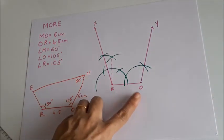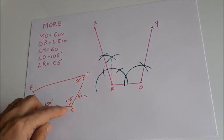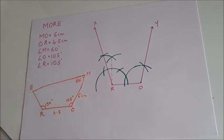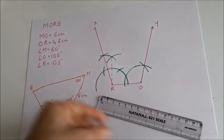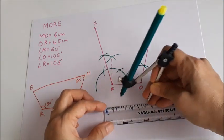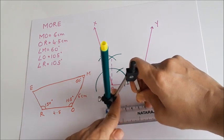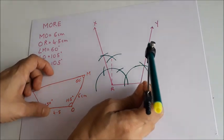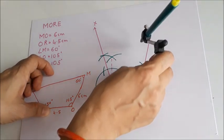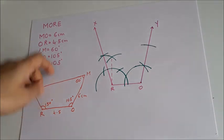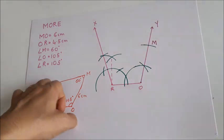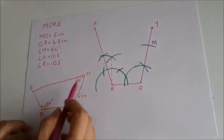So we have got two angles. Now we know that O is 6 centimetres away from M. So on my compass I take radius 6 centimetres. I change the radius to 6 and with center O I cut off this ray. So now this point is M.